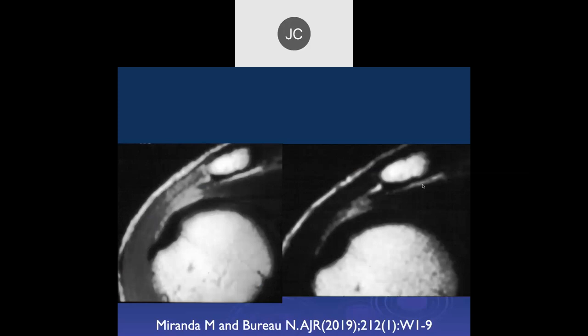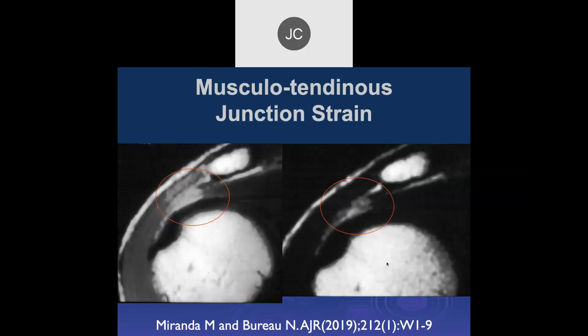There's some bursal-sided partial tearing. This is a PD and a T2 coronal image. This is a young athlete who came in with shoulder pain after athletic activity. This is a musculotendinous junction strain — and again, this is non-surgical.